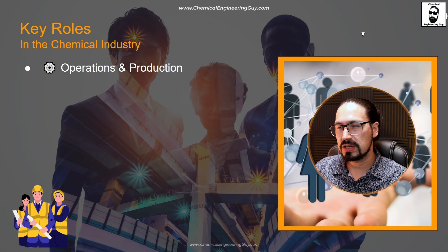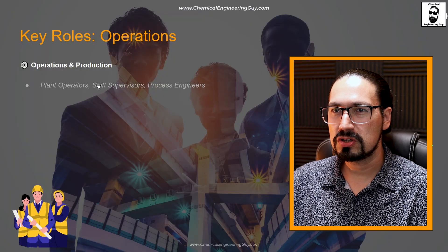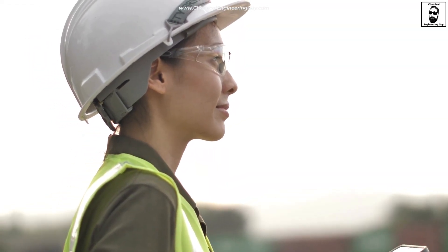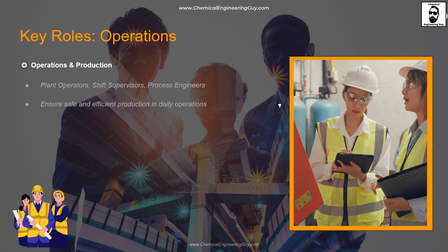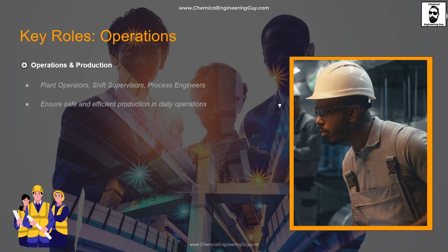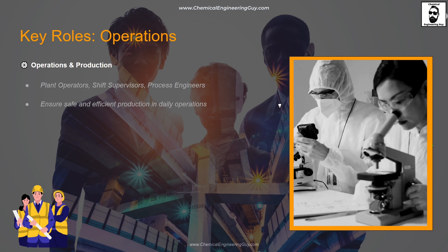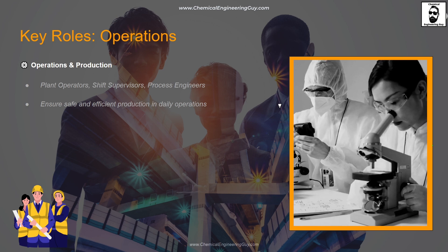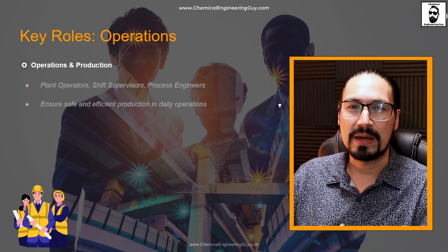Let's introduce the key roles in the chemical industry. We have operations and production — the persons in charge of actually running the chemical plant. We're talking about plant operators, shift supervisors, and process engineers. The main intent of these staff is to ensure safe and efficient production in daily operations. This includes the maintenance team, production team, and process procurement team — generally the persons found in the actual chemical factory, and where you're going to find the most chemical engineers.